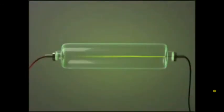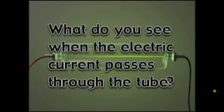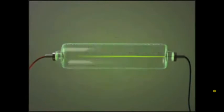What do you see when the electric current passes through the tube? You can see that light is given off. This light is created by rays traveling through the tube. Thompson observed that when a magnetic charge is introduced, the rays are deflected. Thompson reasoned that the rays were made up of negatively charged particles.